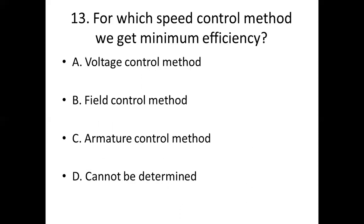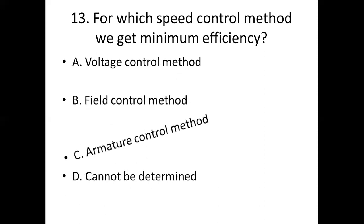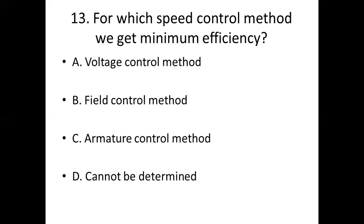Thirteenth bit. For which speed control method do we get minimum efficiency? Option A: voltage control method. Option B: field control method. Option C: armature control method. Option D: cannot be determined. Answer: Option C, armature control method.